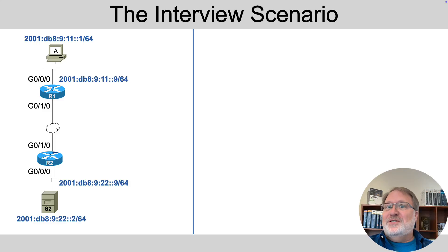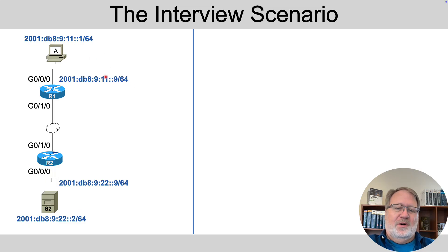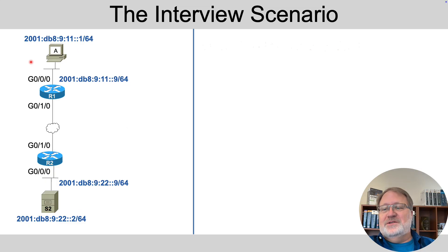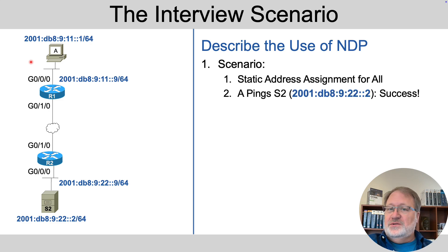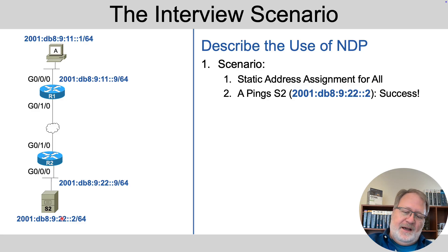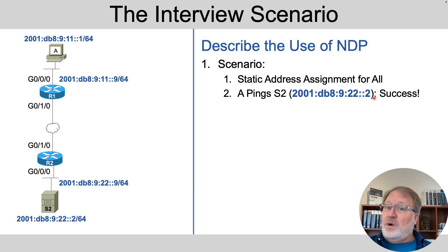Imagine you're in this interview in a room with a marker board, and you see this diagram on the wall. The interviewer starts telling you: imagine static addresses are used all over, so there's no dynamic address assignment, and host A up here is going to ping S2's global unicast address, and it's going to work.